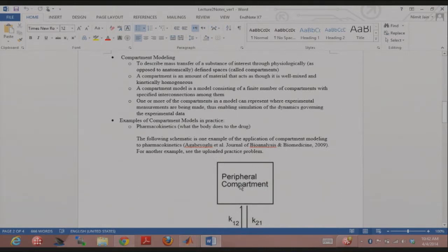And so a compartment model is basically just a bunch of these buckets put together. And you specify the rate constants of exchange or flow between these different buckets. As I mentioned with the MRS example, one or more of the compartments can represent where experimental measurements are being made. And then you can simulate the dynamics governing the experimental data based on your model.